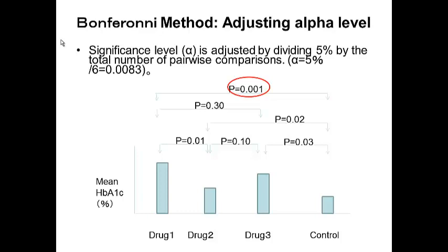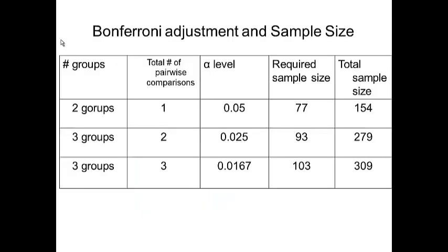There is actually a benefit of adjusting the alpha level. Because if you start manipulating p-values, the reader may be confused about how p-values are manipulated. But instead, you could state in the statistics section that all statistical analyses are examined with a significance level of 5% divided by the total number of comparisons. That way, it's probably easier for reviewers to understand what's happening.